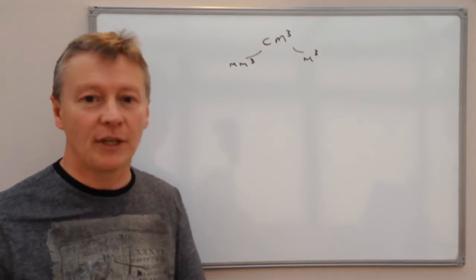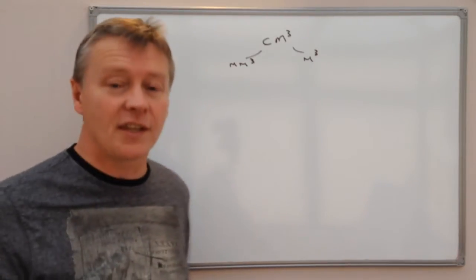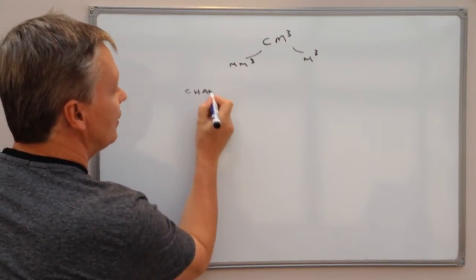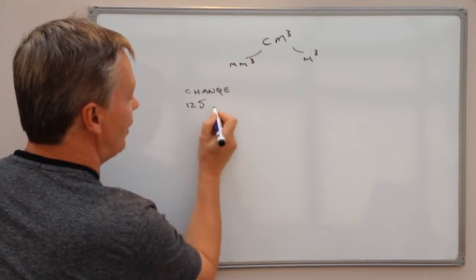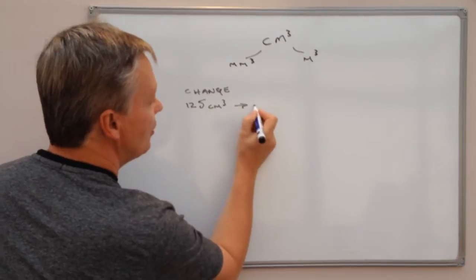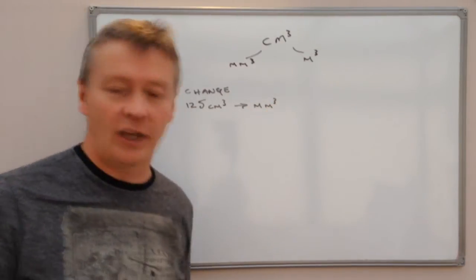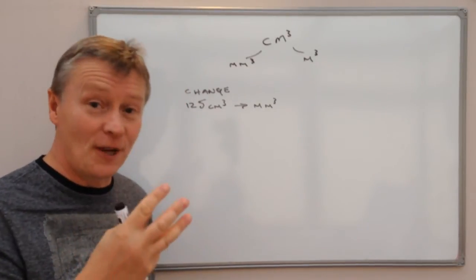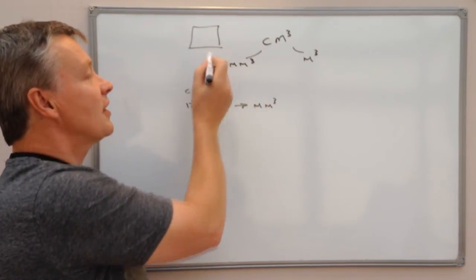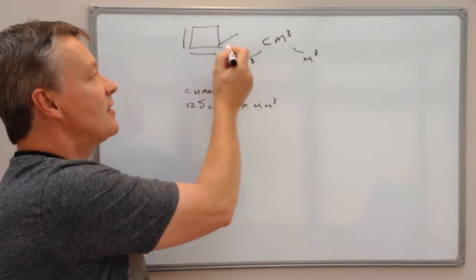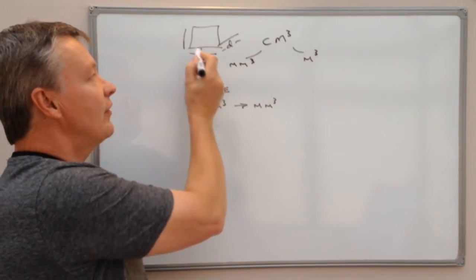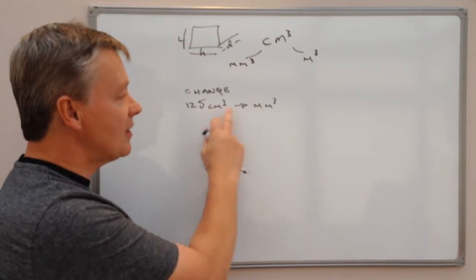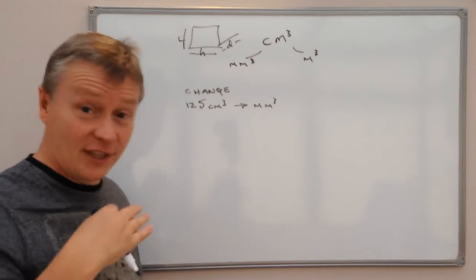It's fairly straightforward, but you've got to make sure you follow some of the rules. A typical exam question would go something like: change 125 centimeters cubed to millimeters cubed. You've got to imagine you're thinking in three different dimensions, because volume is all about length times height times depth — those three things you need to play around with in your mind.